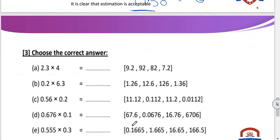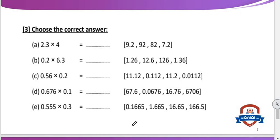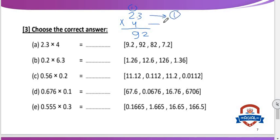Number 3: choose the correct answer. Letter A: 2.3 multiply 4. Ignore the decimal point — 23 multiply 4. 4×3=12 — put 2 carry 1; 4×2=8 plus 1=9. Result is 92. In 2.3, decimal point is after 1 digit; in 4 there is no decimal point, so 0 digits. 1 plus 0 equals 1. Put decimal point after 1 digit from the right. So the result will be 9.2.